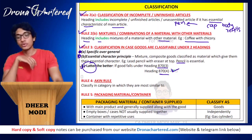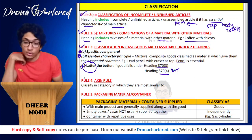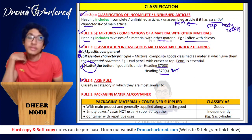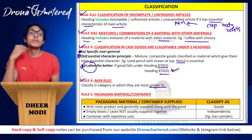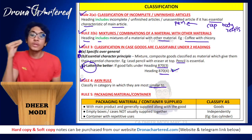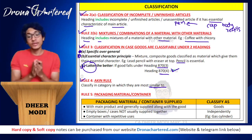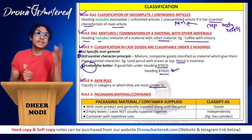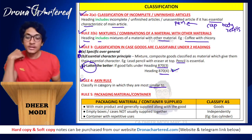The next rule is Rule 4, the akin rule. Akin means similar. If you are not able to find an exact category for the goods, classify them in the category to which they are most similar.